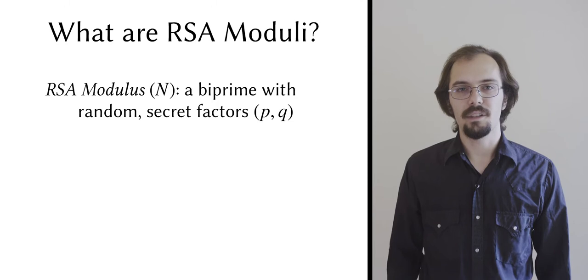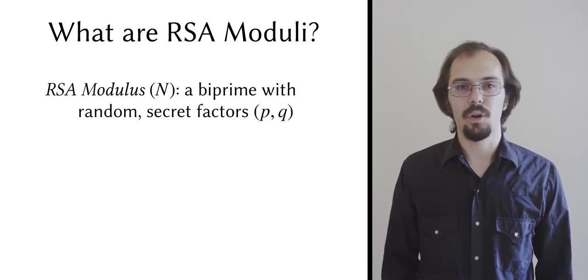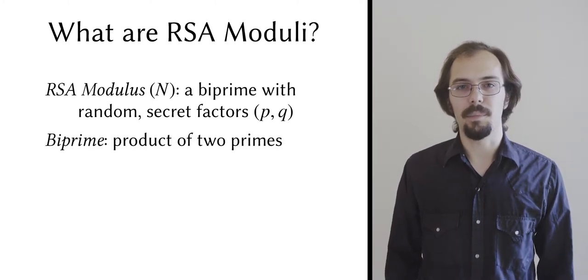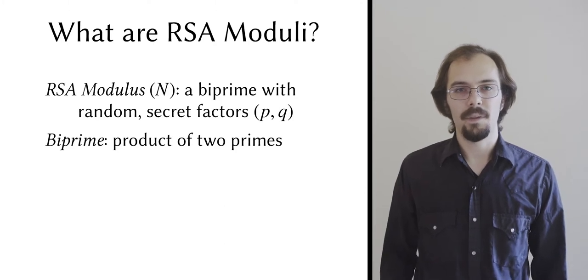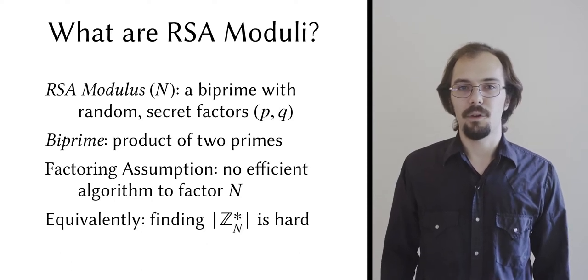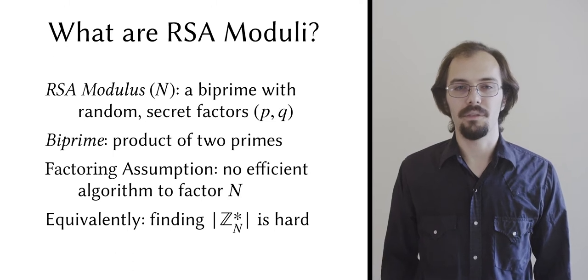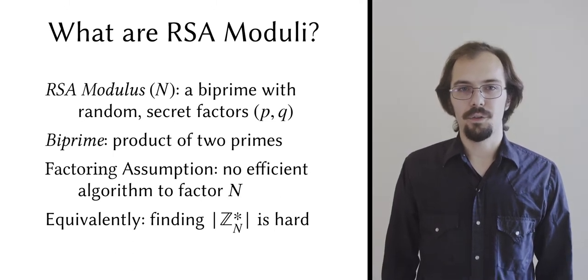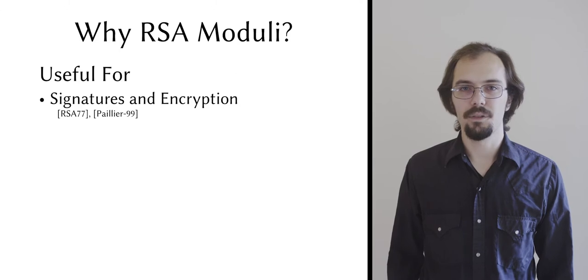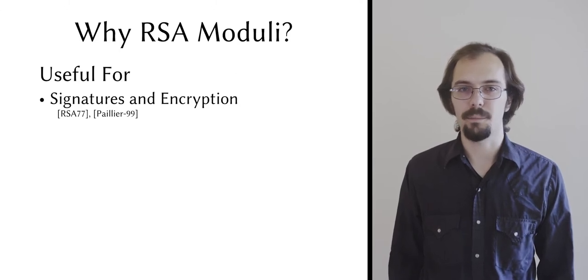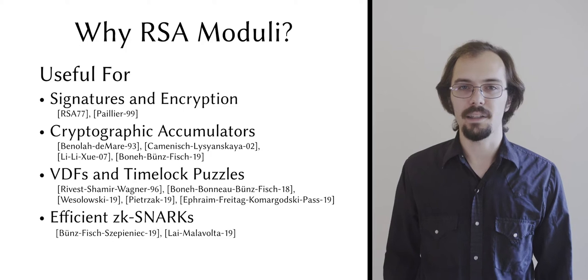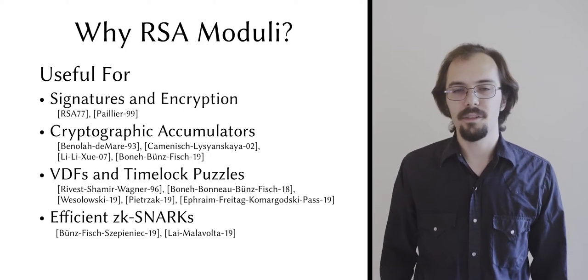An RSA modulus, usually designated by the variable n, is the product of two large randomly chosen primes, which we call p and q. We call such numbers biprimes, and in this talk I will use the terms biprime and RSA modulus interchangeably. It is one of the oldest public key assumptions we have that factoring such numbers is hard, and when used as the modulus, they form multiplicative groups wherein finding the group order is equivalent to factoring. This makes RSA moduli useful for a huge range of applications. Of course, they can be used to construct signature schemes and various kinds of encryption, but they're also useful for building advanced primitives, such as cryptographic accumulators, time lock puzzles and verifiable delay functions, and recently some kinds of highly efficient zero knowledge argument systems. This list is far from exhaustive.